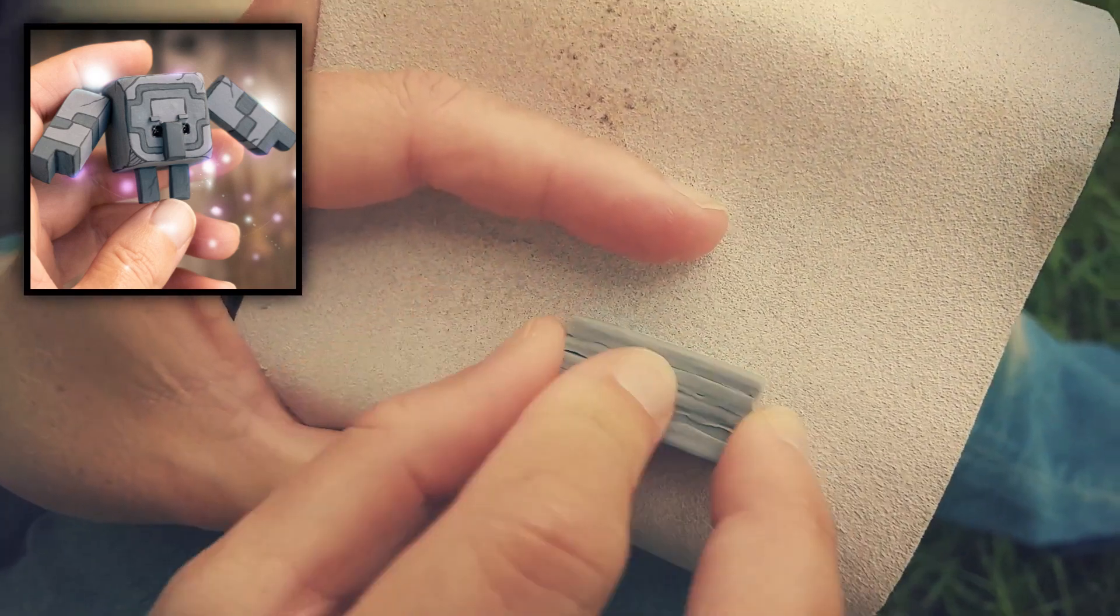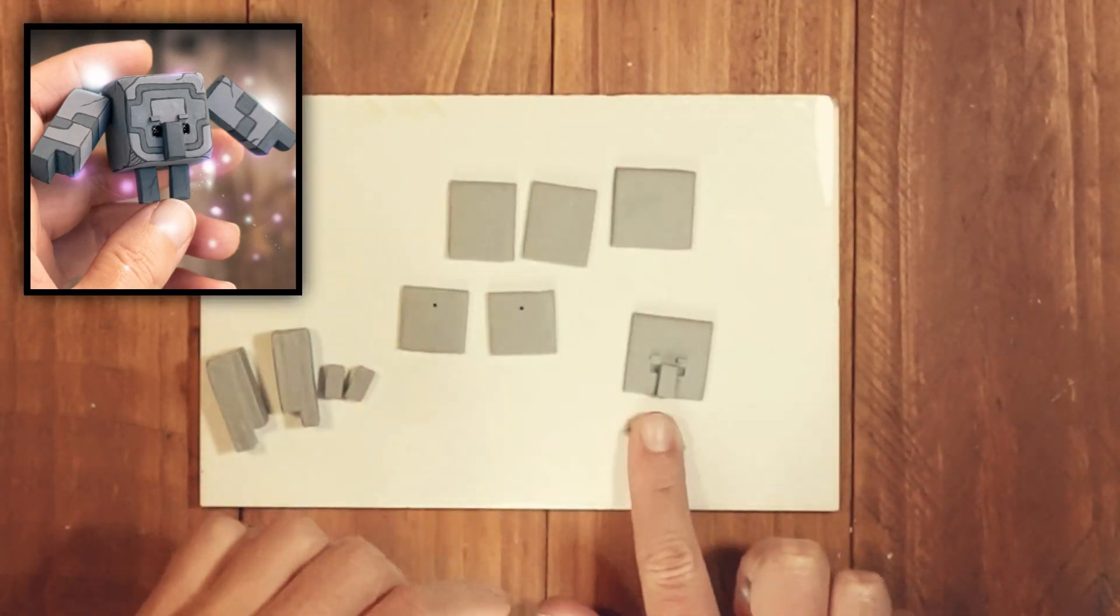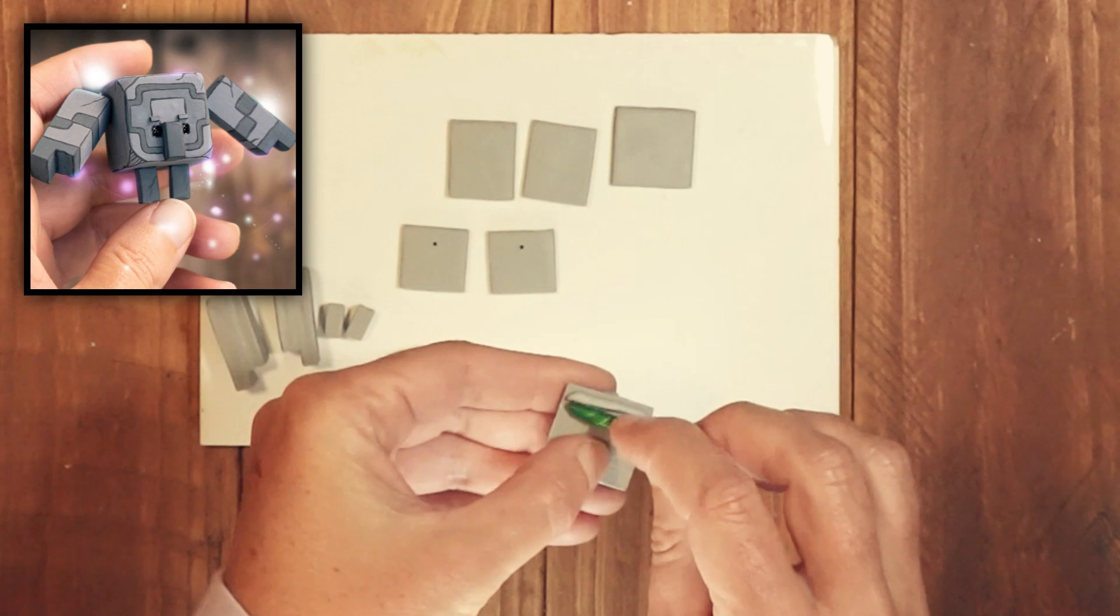Bake all your pieces and smooth down with a 120 grit sandpaper. Now to put the cube together. Rolling out a piece to match the length of the cube. Blending it in.